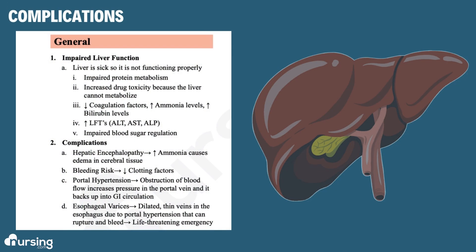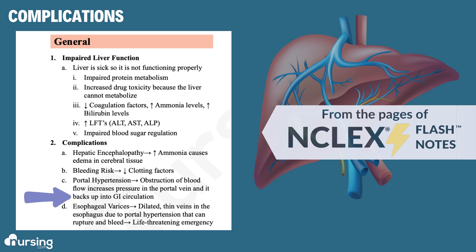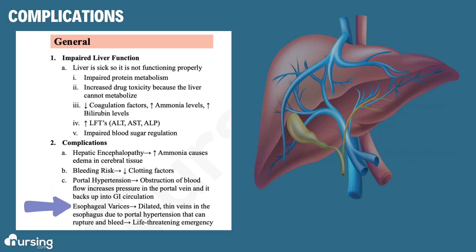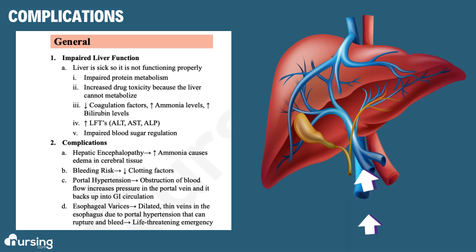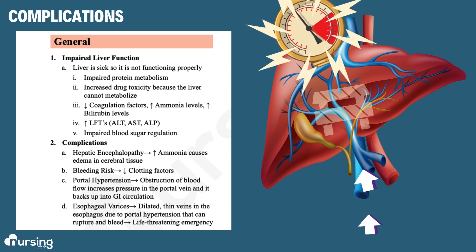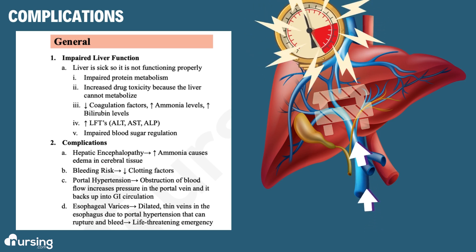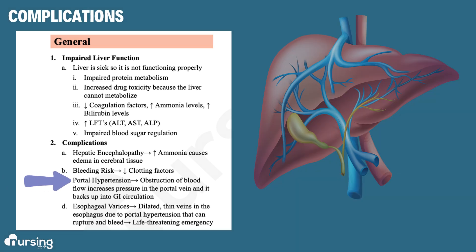The two most severe complications of cirrhosis are both caused by impaired blood flow from the scar tissue that forms. Normally, blood flows out of the gut and into the liver for detoxification and metabolism via the portal vein. When blood flow begins to get obstructed within the liver, pressure is going to build up, causing portal hypertension.